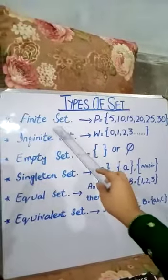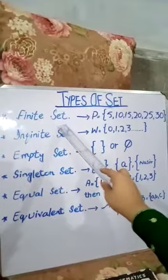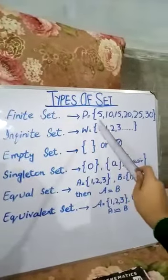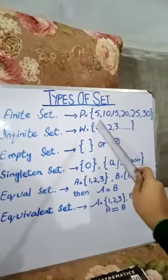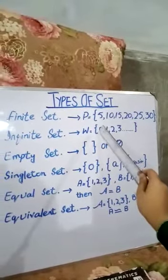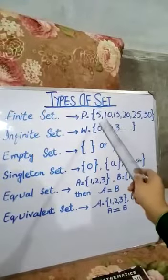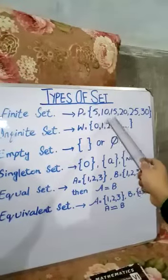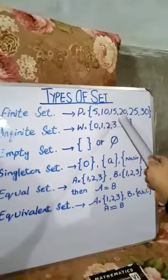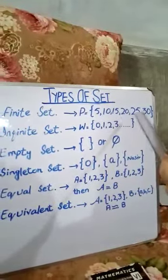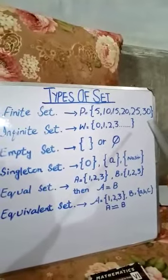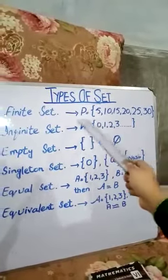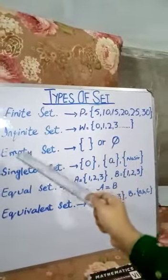Now, what is a finite set? A set whose elements can be counted is called a finite set. For example, let P = {5, 10, 15, 20, 25, 30}. It is countable, that's why this is a finite set.